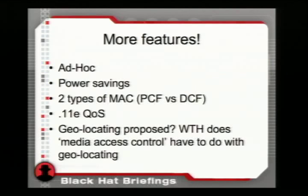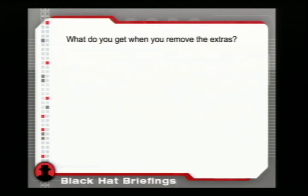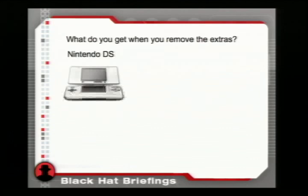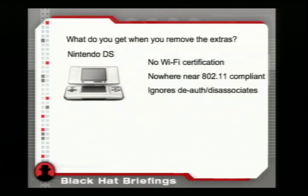To show what these standards people are thinking: somebody proposed geolocating in an 802.11 committee meeting — having the layer-two network card tell the access point your GPS coordinates. What does that have to do with getting packets from A to B? Absolutely nothing. If you remove all the extras — what I call 802.11 minus minus, or Wi-Fi Lite — you get something like a Nintendo DS: no Wi-Fi certification, not 802.11 compliant, ignores de-auth and disassociate frames, and it works great.